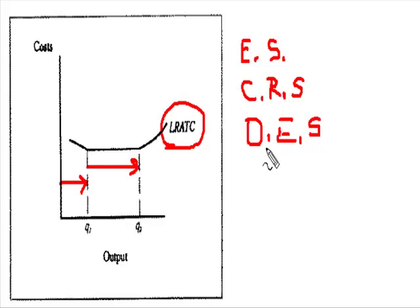By definition, diseconomies of scale are whenever the average total cost function begins to turn up and rise. So that would be any output level beyond Q2.